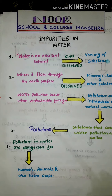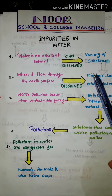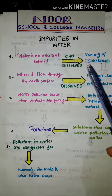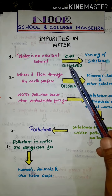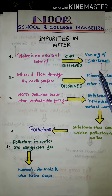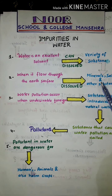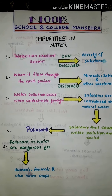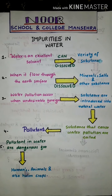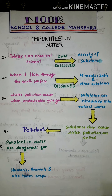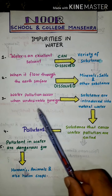Water is an excellent solvent and can dissolve a variety of substances. When it flows through the earth's surface, it dissolves mineral salts and other substances. Water pollution occurs when undesirable foreign substances are introduced into natural water.